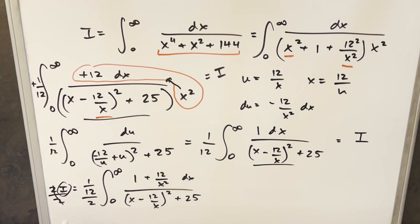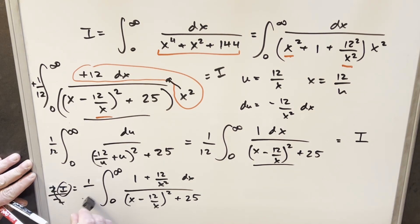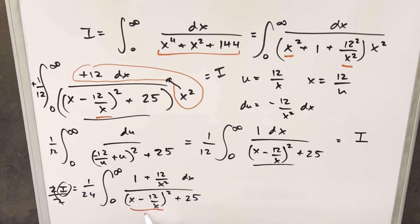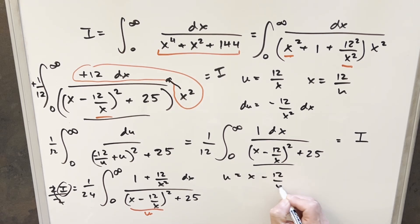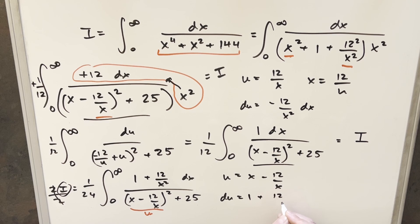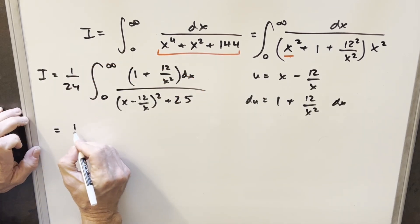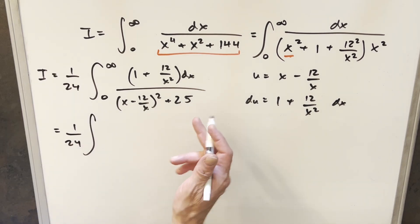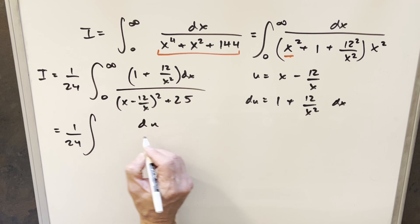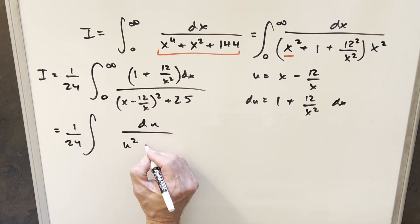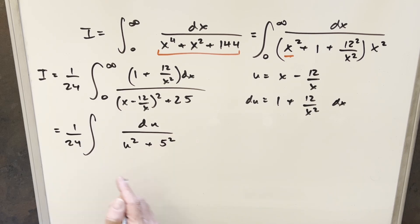We're perfectly set up for another u substitution. I'll make u equal to x minus 12 over x. The beauty of that is when we take the derivative, we get du equals 1 plus 12 over x squared dx, which is exactly what we have in the numerator. So our du is the whole numerator. This becomes 1 over 24 times the integral of du over u squared plus 25, and I'll write 25 as 5 squared so it's in the right form.